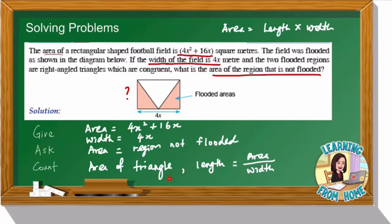To find the area of the triangle, the formula is ½ × base × height. We have the base but we don't have the height. We can get the height from the area of the rectangle. The area is given as 4x² plus 16x and the width is given, so we can use the formula: length = area ÷ width. When we have the length, we can find the area of the triangle.